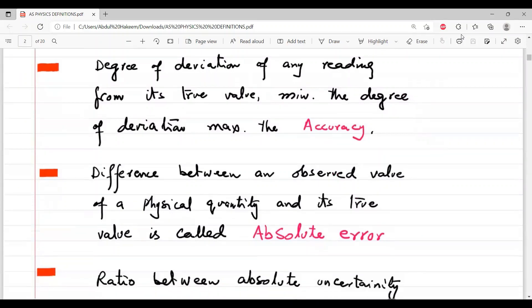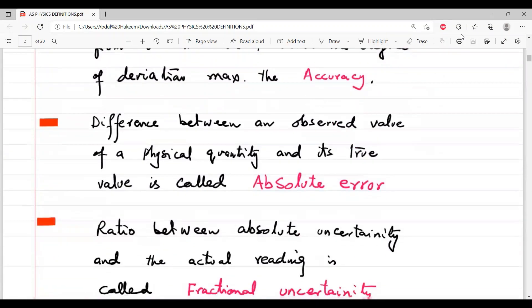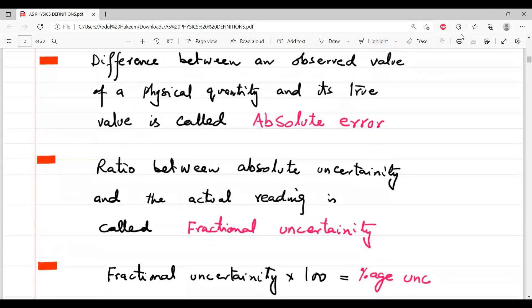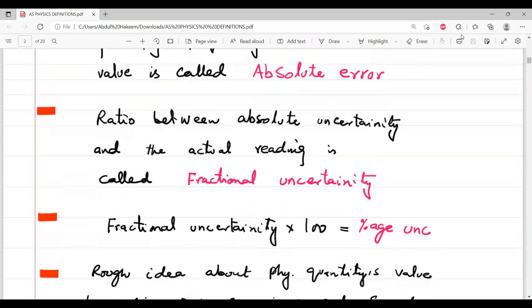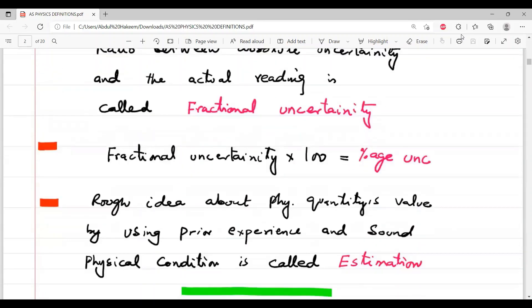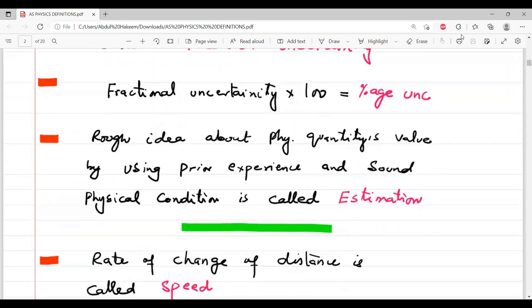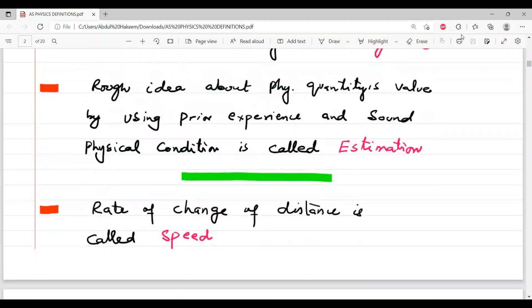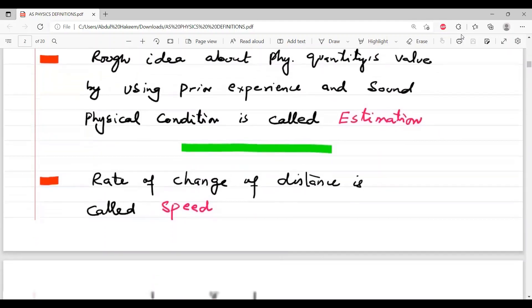Then absolute uncertainty, absolute error, then fractional uncertainty, then percentage uncertainty, then estimation.